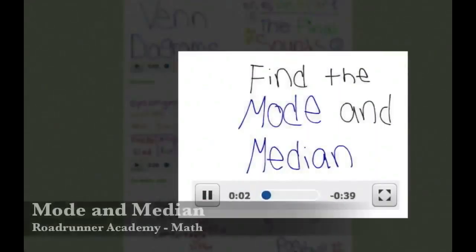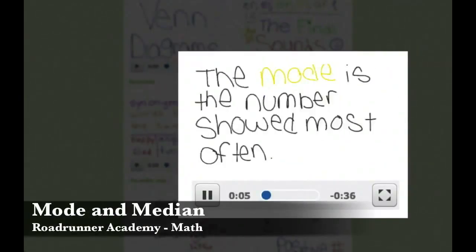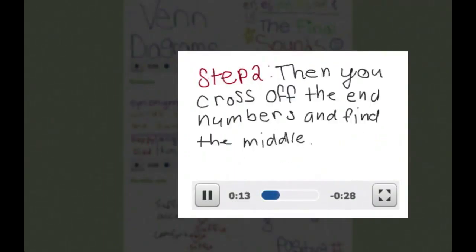Find the mode and median. The median is the middle number in an order set of data. The mode is the number showed most often. Step 1: First you put the numbers from least to greatest. Step 2: Then you cross off the end numbers and find the middle.